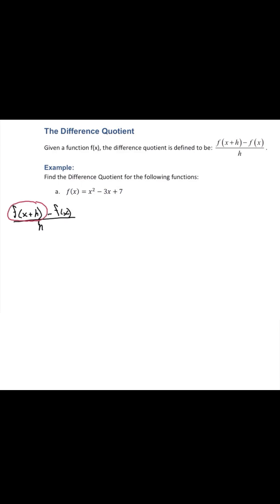First, f of x plus h. Recognize that that's just function notation. f of x plus h means that we're going to replace all of the x's in the original f function with x plus h. So we have x plus h squared minus three times x plus h plus seven.